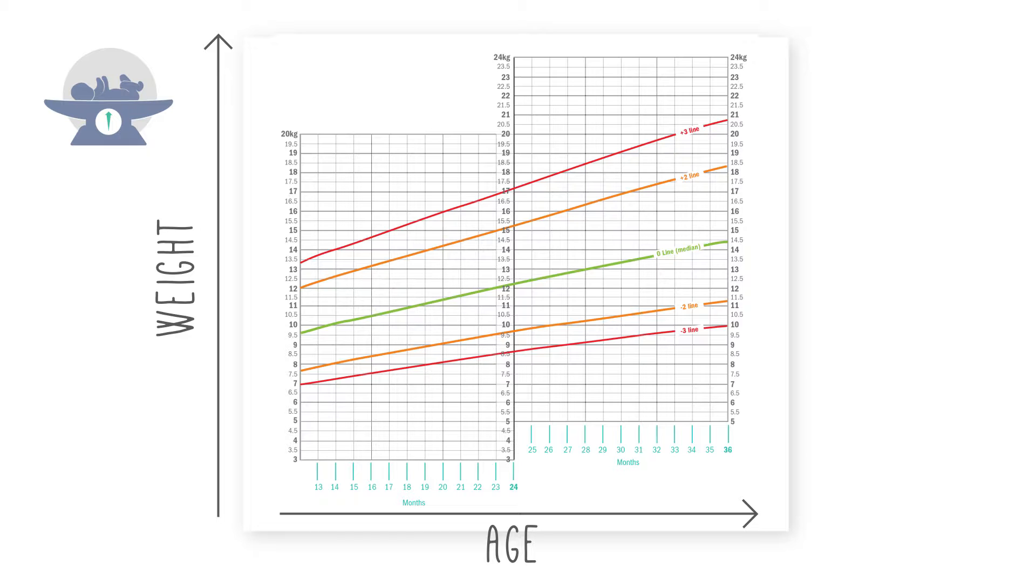And you'll notice that there are different colored lines on this chart. The green line in the middle is the median, so this means that about half of all South African children will fall above this line, and half will fall below it.